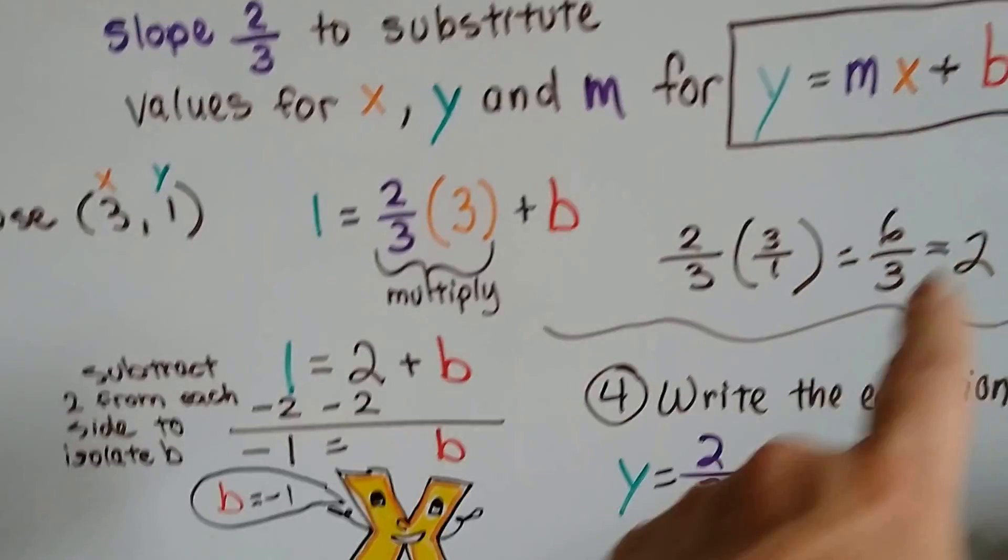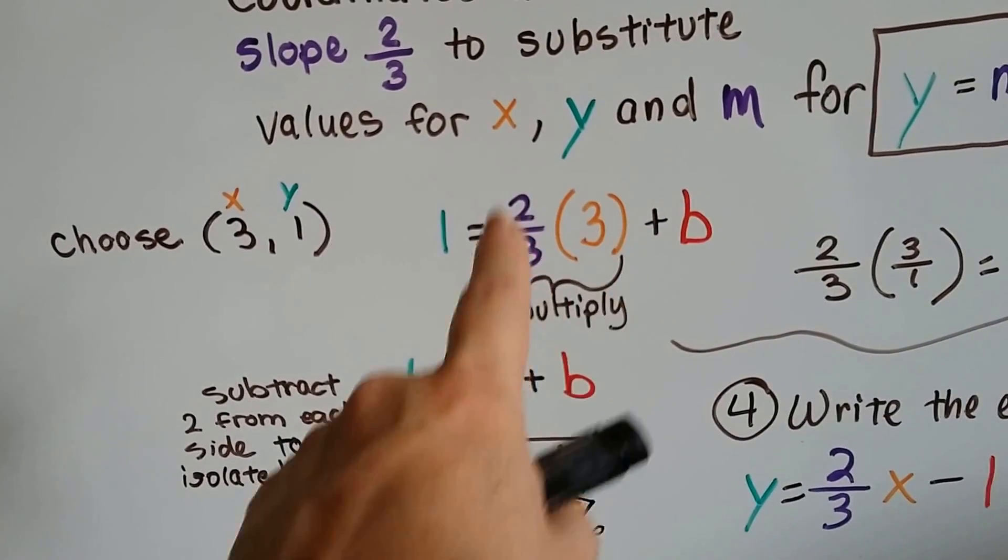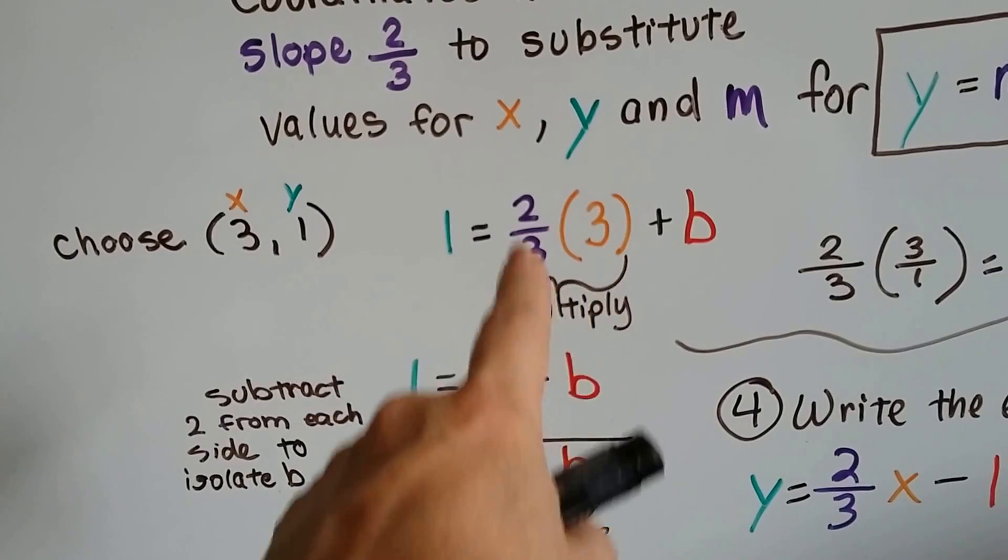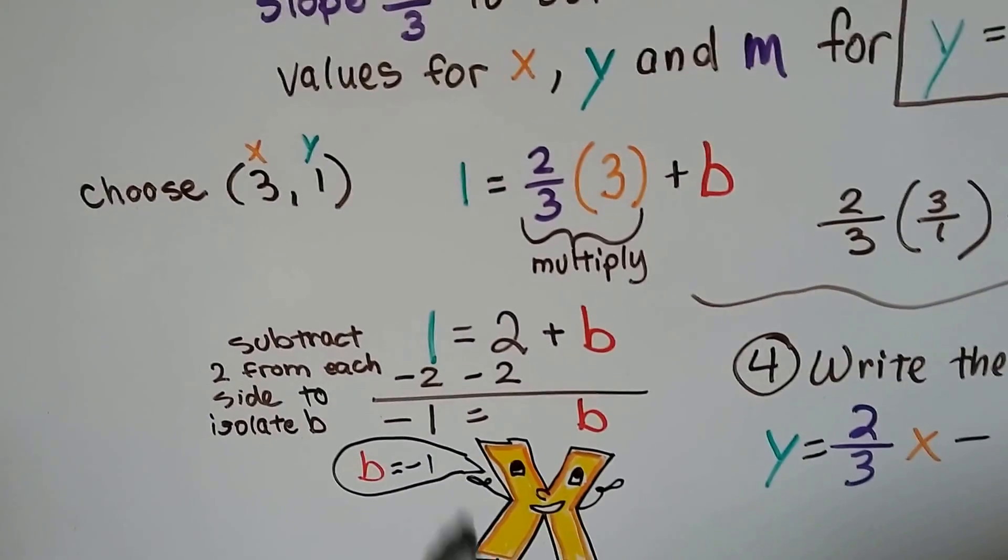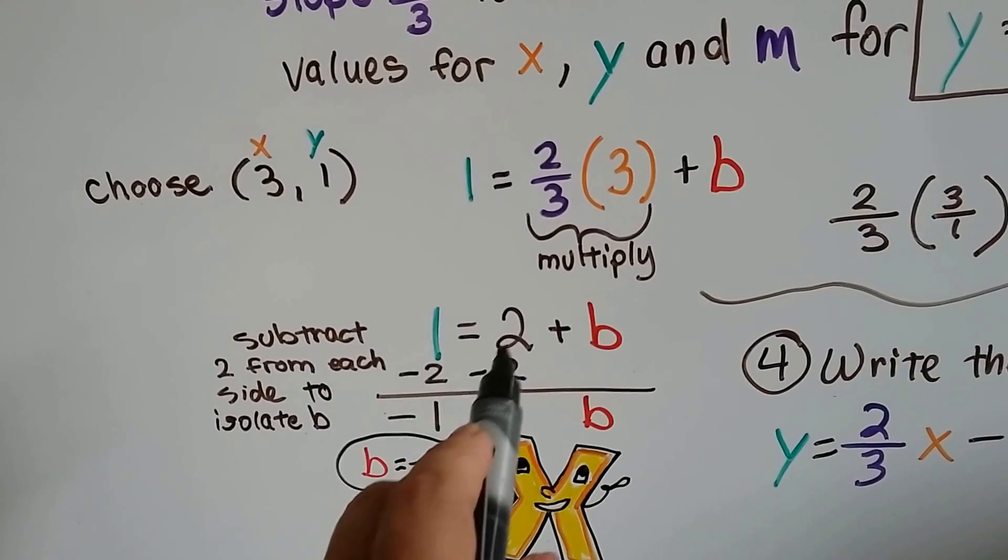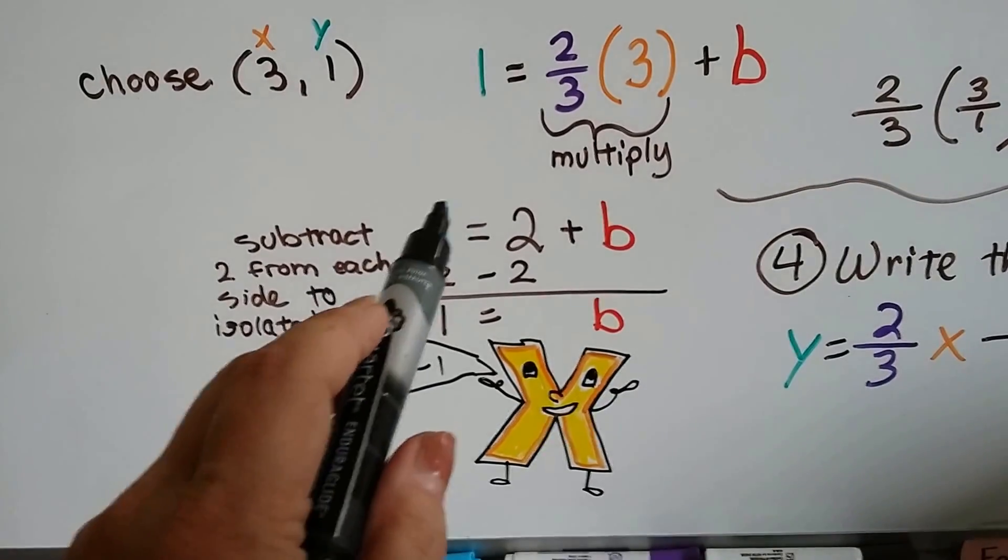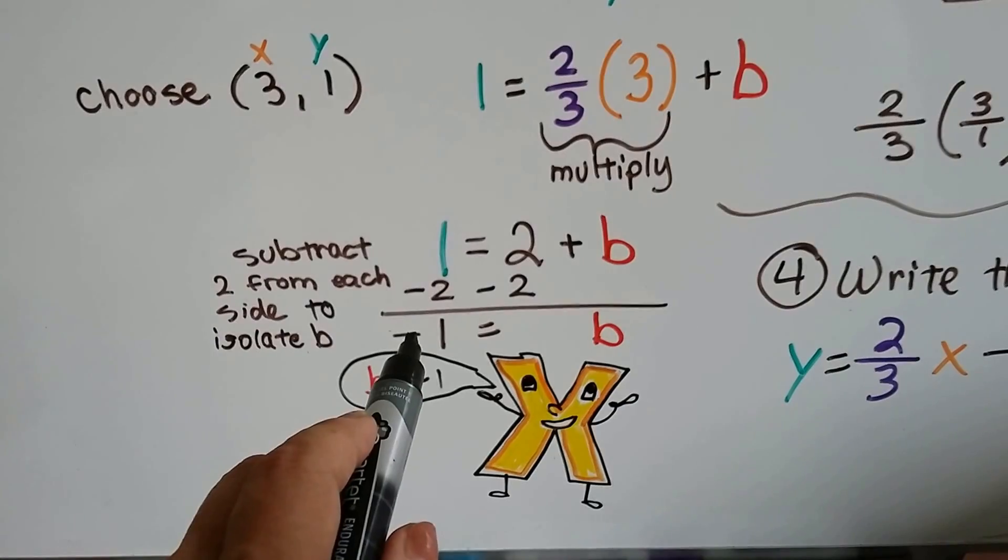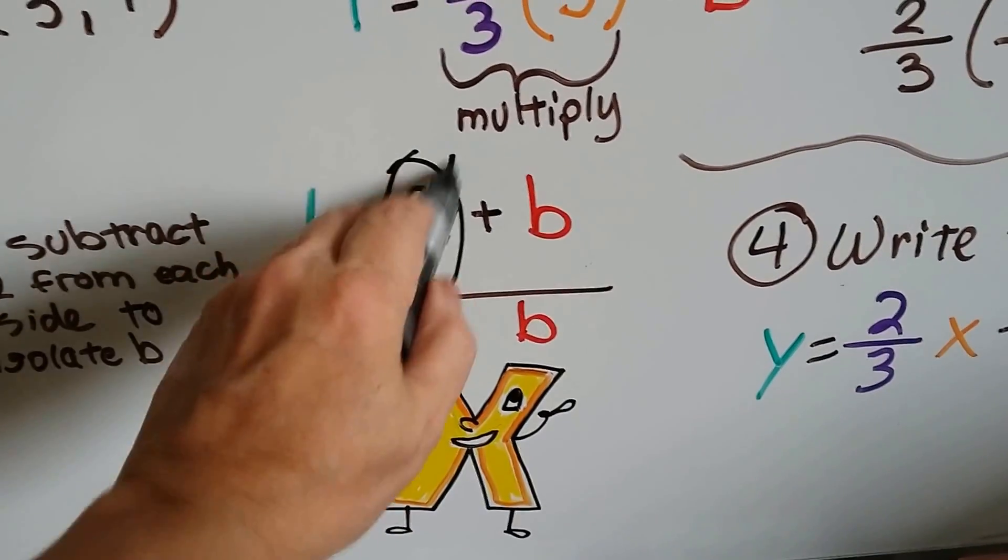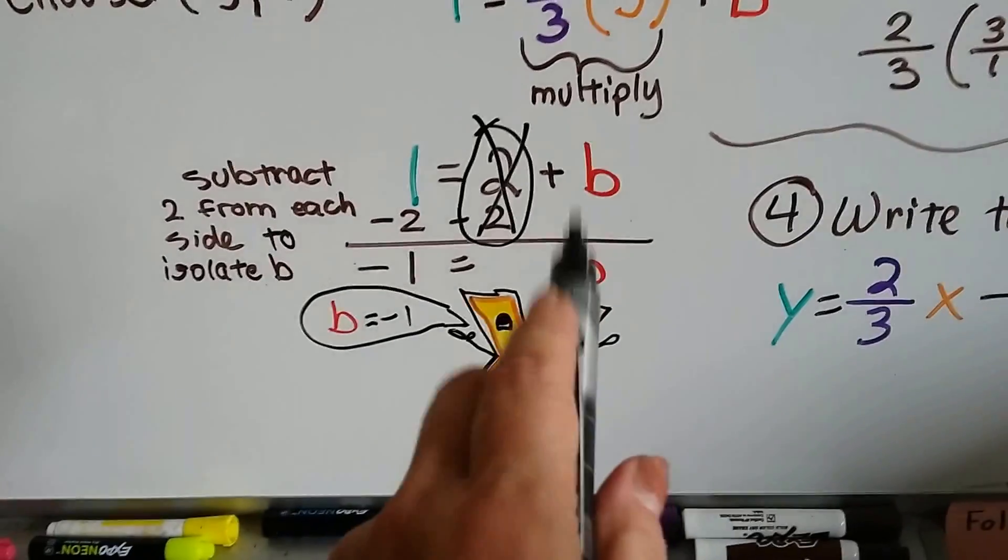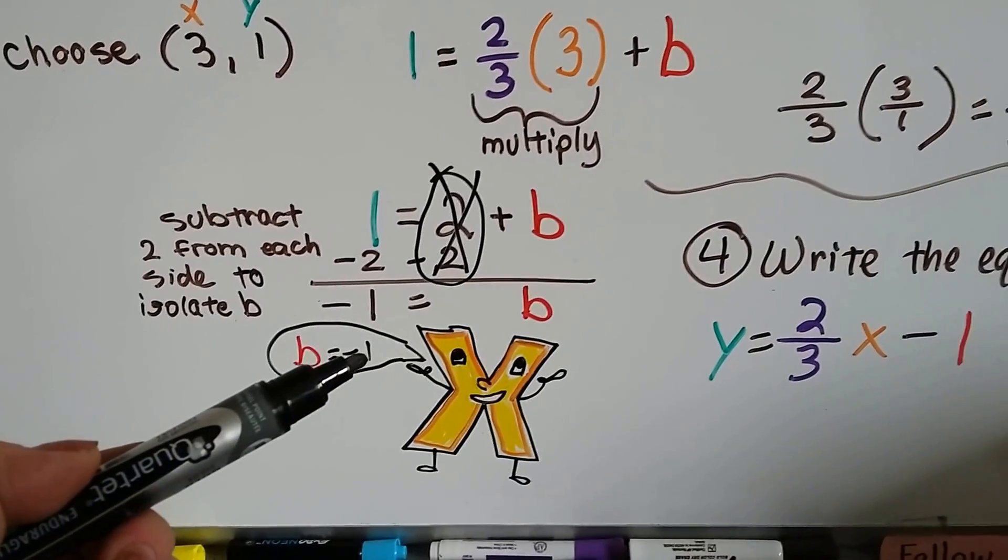Now I take this 2 and our equation says 1 equals 2 plus b. So I subtract 2 from each side of the equation to isolate b. 1 take away 2 is -1. This 2 and the negative 2 create a zero pair and cancel each other out. The b drops down. Our y intercept b is -1.